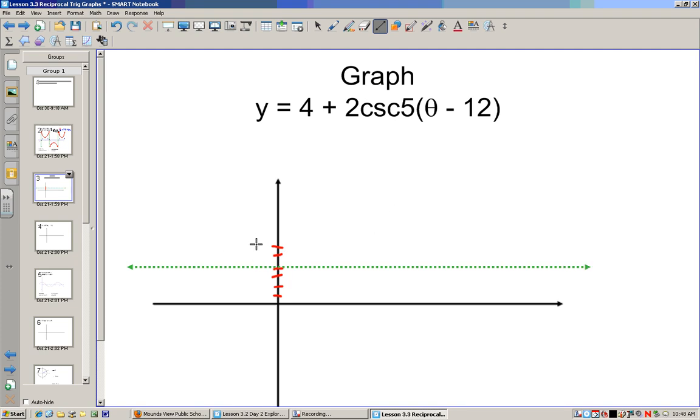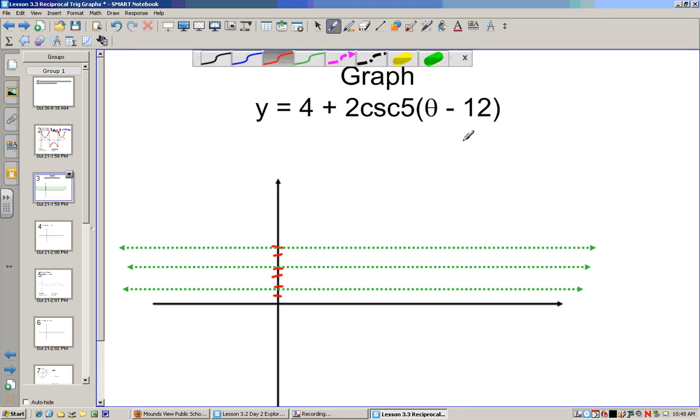Let's go up 4 and draw a horizontal line. And now we go up 2 and down 2 from that to find our upper bound and lower bound of our sine function.